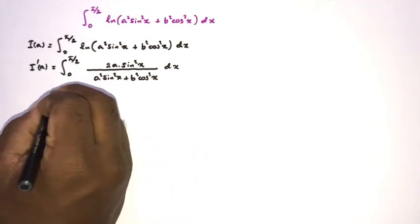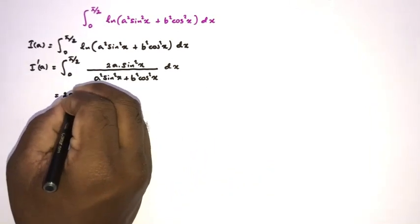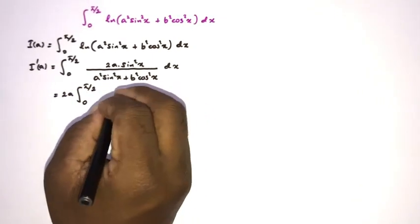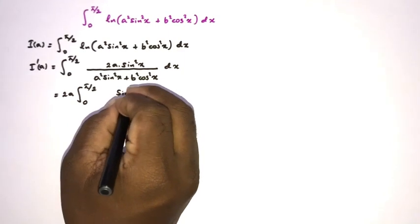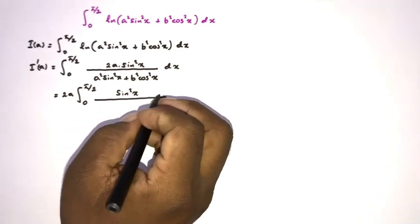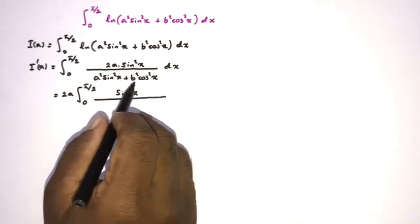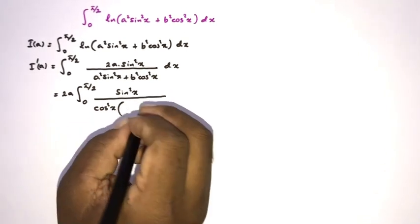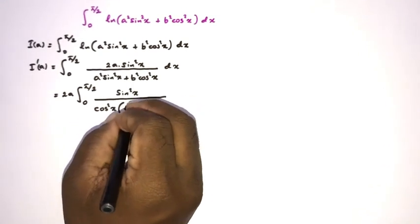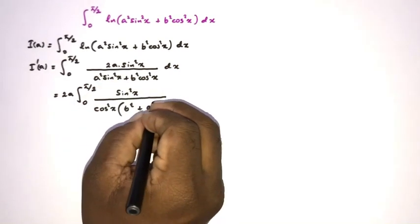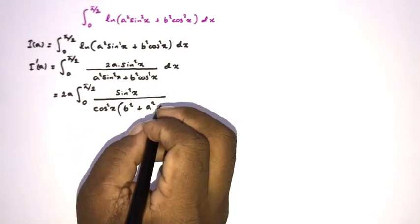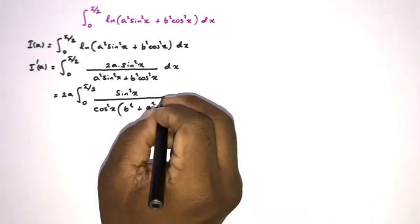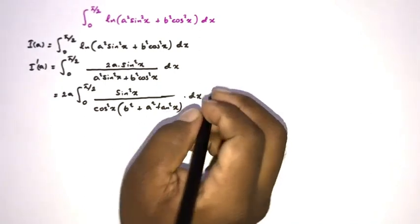The factor 2a is a constant, so we take it outside the integral sign. We then factor out cos²x from the denominator, giving 2a times ∫₀^(π/2) of sin²x/cos²x divided by (b² + a²·sin²x/cos²x) dx. Since sin²x/cos²x = tan²x, this becomes 2a·∫₀^(π/2) tan²x / (b² + a²tan²x) dx.